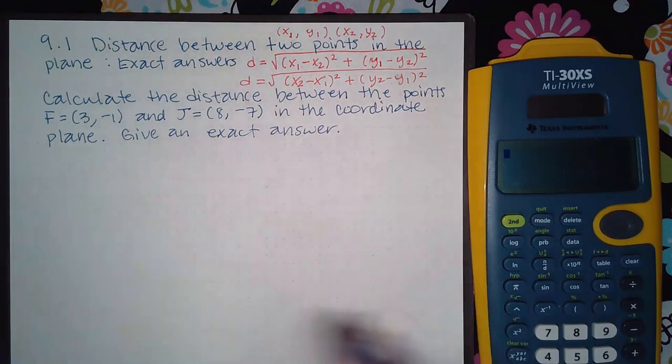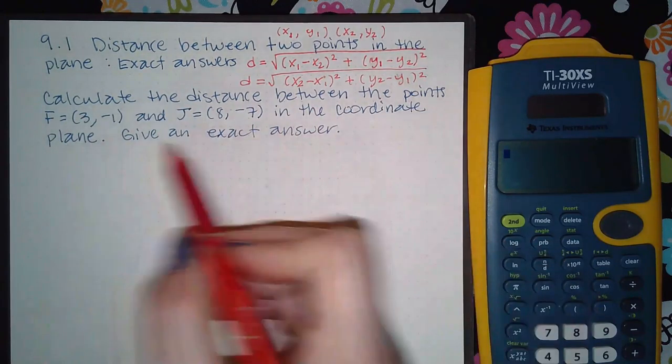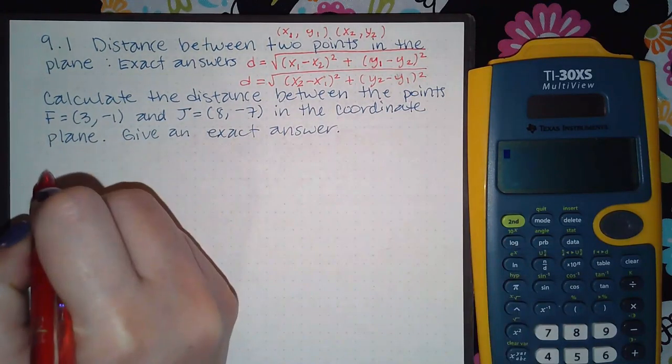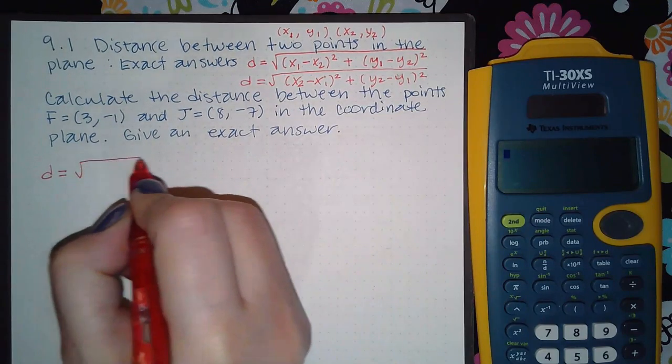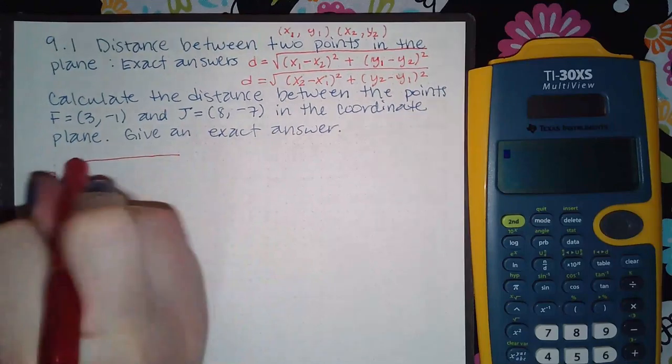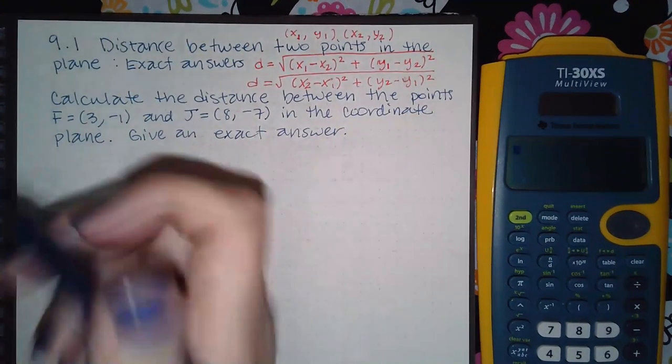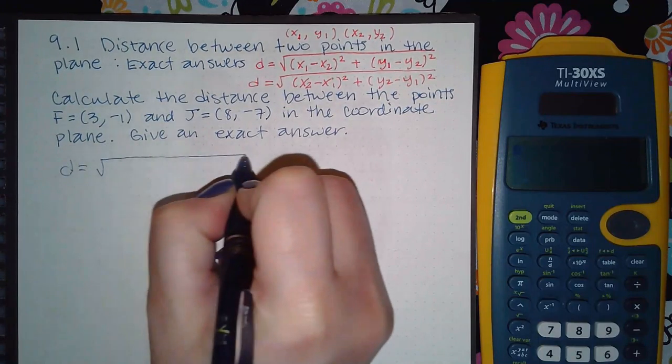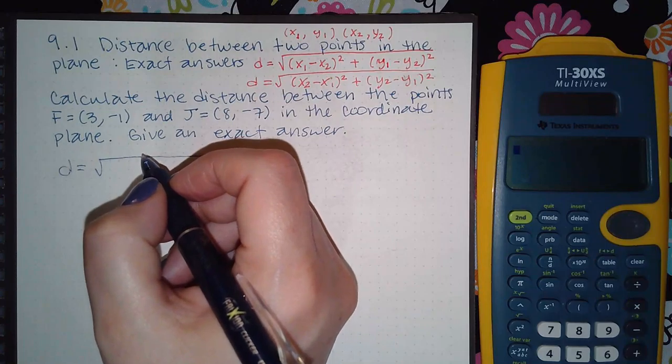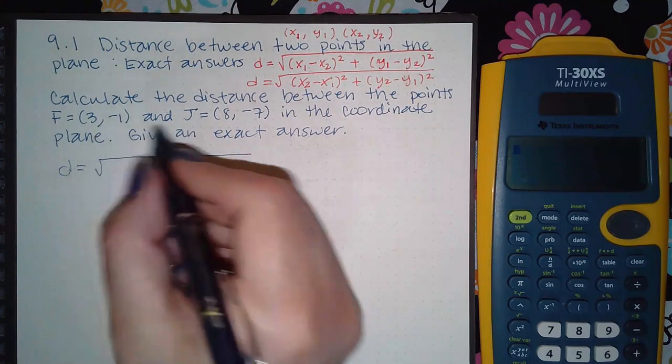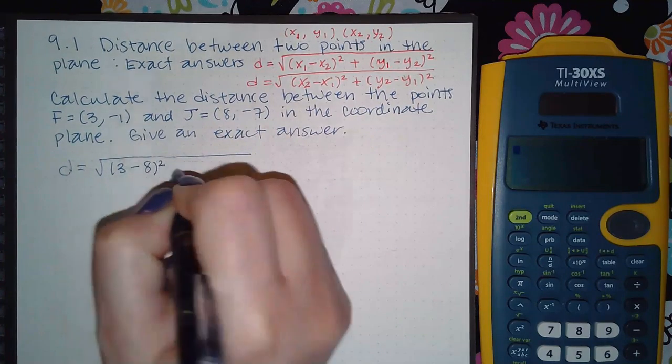Let's go ahead and work this one out. It says calculate the distance between these two points F=(3,-1) and J=(8,-7) in the coordinate plane. Give the exact answer, so they don't want me to type the square root in the calculator.